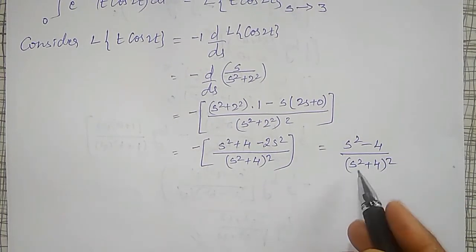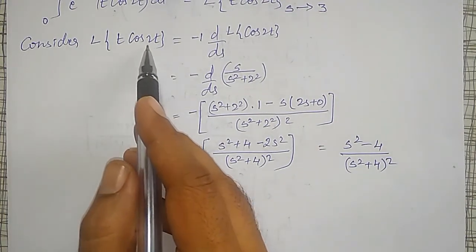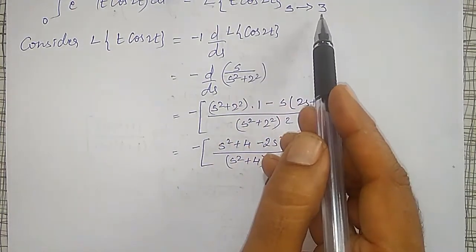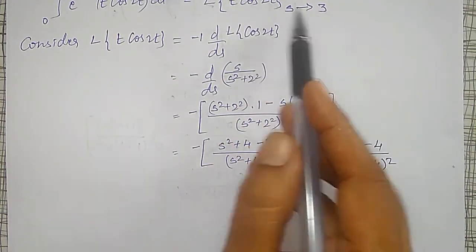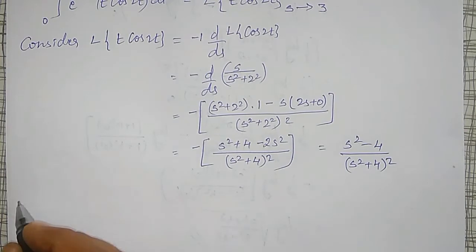Simplifying: -(s²+4-2s²)/(s²+4)² gives us (s²-4)/(s²+4)². This is the Laplace transform of t·cos(2t). Now, s is replaced by 3 to get the evaluation of the original integral.